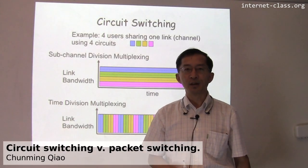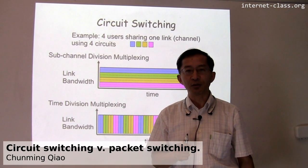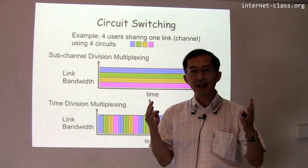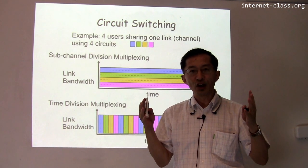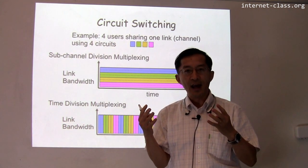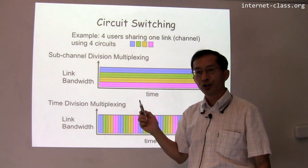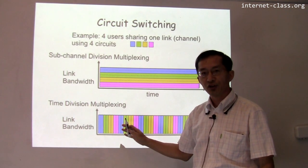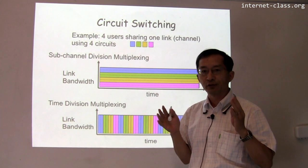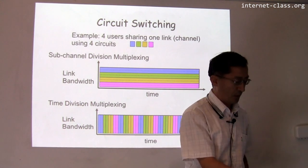You learned about telephone networks and patch panels. In general communication networks, if we have four users and you do circuit switching, then the link — or communication channel bandwidth — is divided into four smaller pieces and each user gets a dedicated piece. Or you could do time division multiplexing, where each user gets the entire bandwidth but only for a fraction of time — one user, second user, and so on. That's circuit switching.